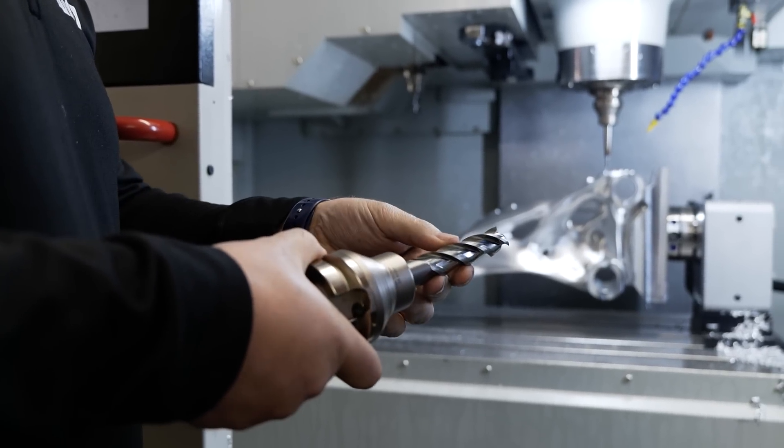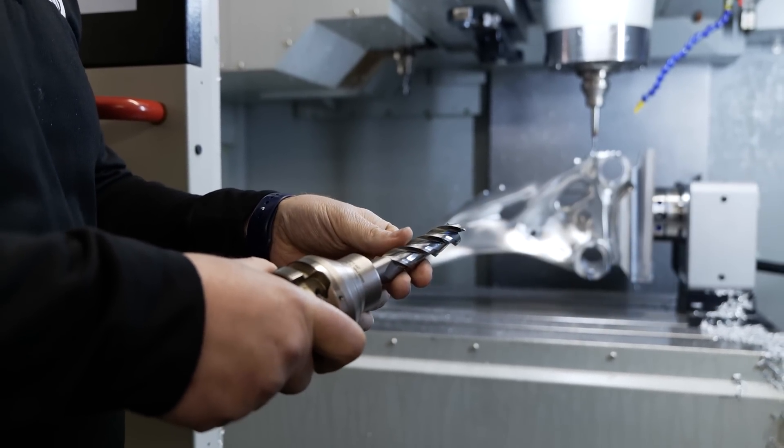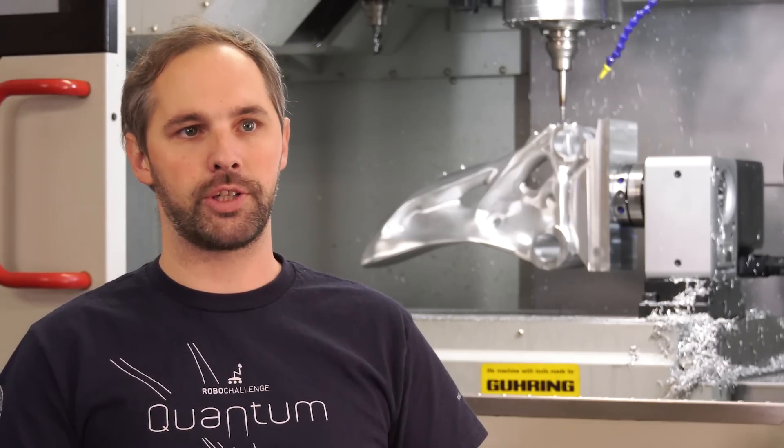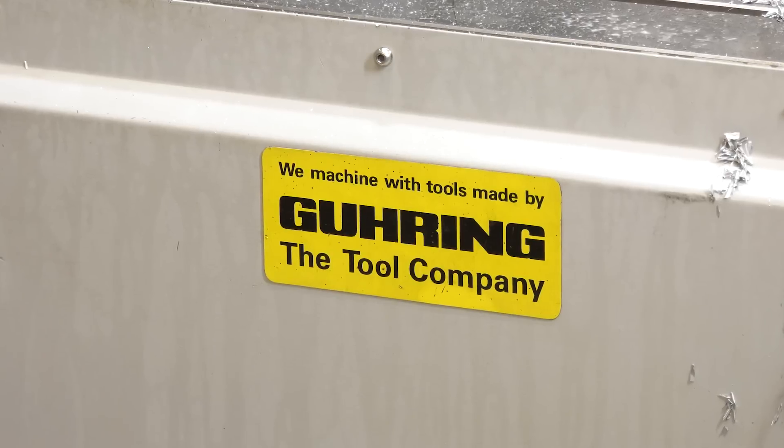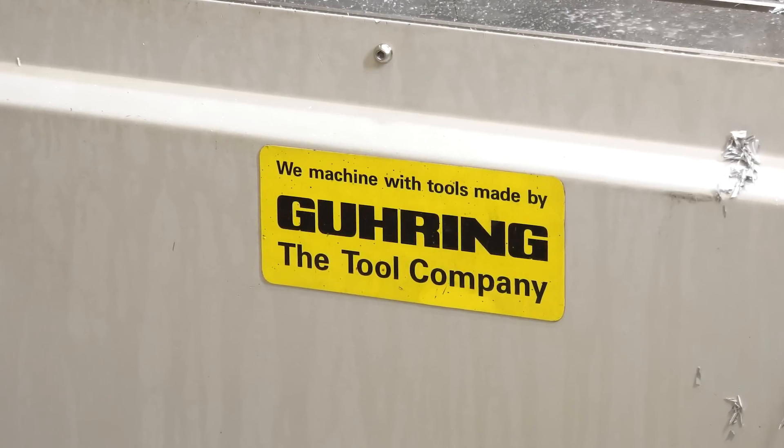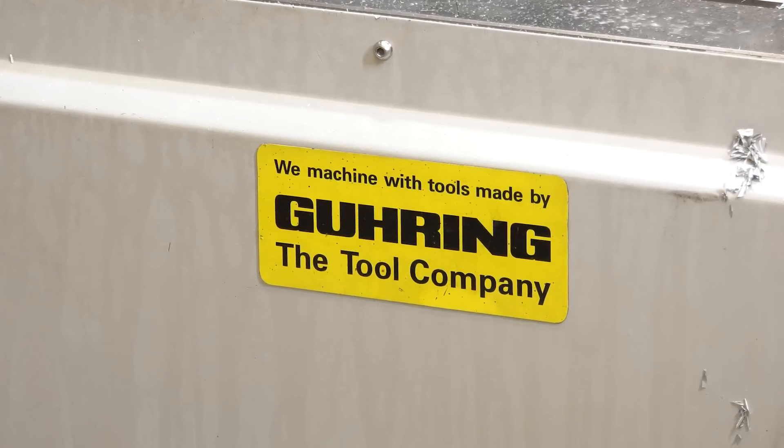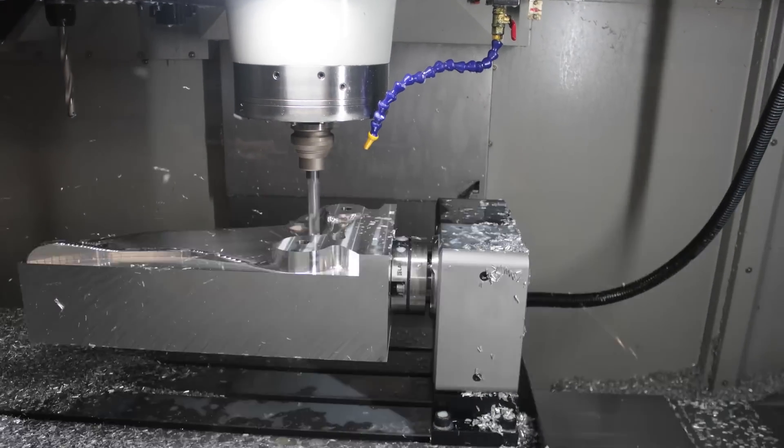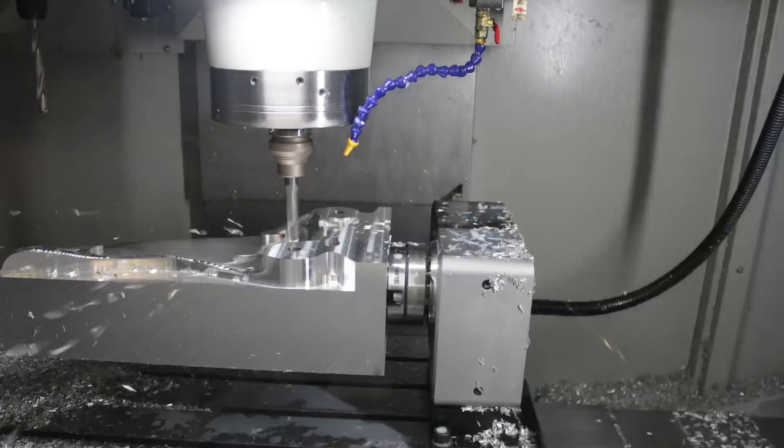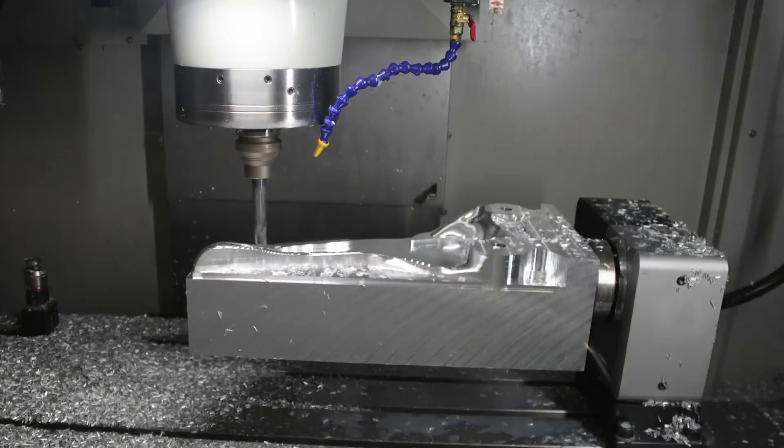We don't know what we're doing from one day to the next, so we need a machine tool supplier that can get us the tooling we need almost next day or same day. We work very closely with Goering to manufacture tooling to suit the jobs that we do, and the turnaround time is critical. Like this part behind us, we've got lots of custom tooling in this process to make sure that we can get the job done quickly but most importantly to a really high spec.